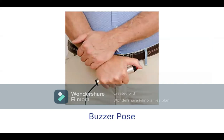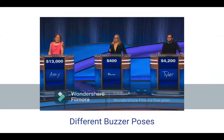When you make it onto the show, you want to know how to pose with the buzzer. This is a picture of what has been thought to be the ideal pose by former contestant Fritz Holtznagel: hold the buzzer in your dominant hand, hold your wrist loosely with your non-dominant hand, and rest both arms in front of you. However, a screenshot from the recent Tournament of Champions shows you can hold the buzzer any way you want — Amy holds it by her side, Maureen holds it up in front of her, and Tyler rests it on the podium.